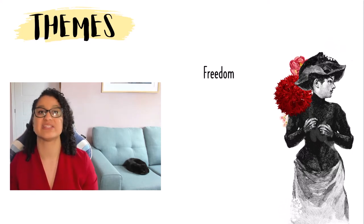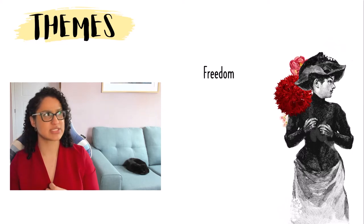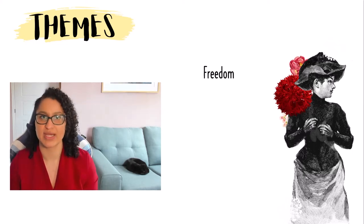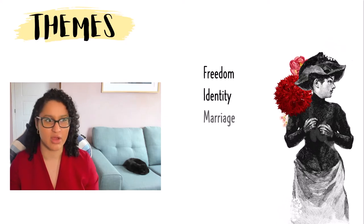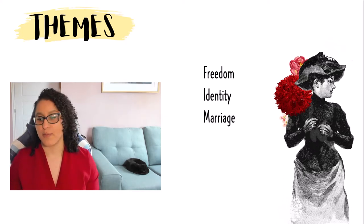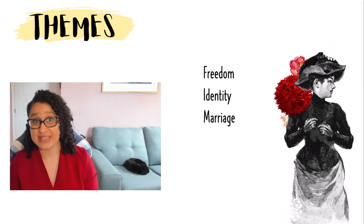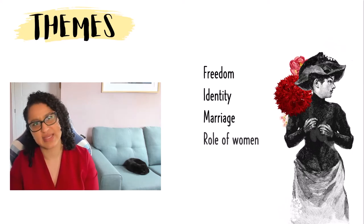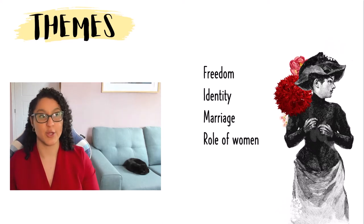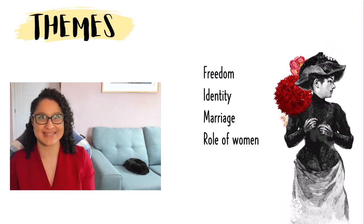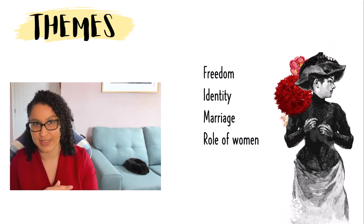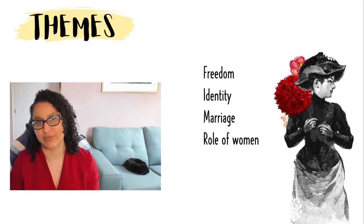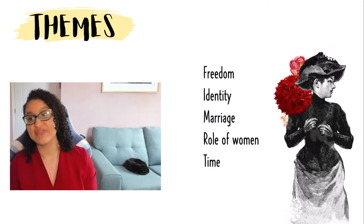One of the first big themes is freedom — how important is freedom to a person? We've also got identity, specifically the identity of women: what makes up their identity, who are they, what have they got. Marriage, again linked to that — what marriage is like as an institution, how it limits your freedom and how oppressive it is. The role of women, because they are oppressed, they lack freedom, their identity is kind of subsumed by their husband. And then time.